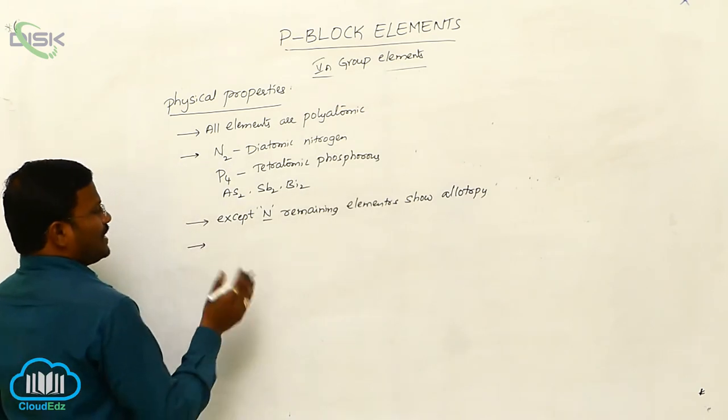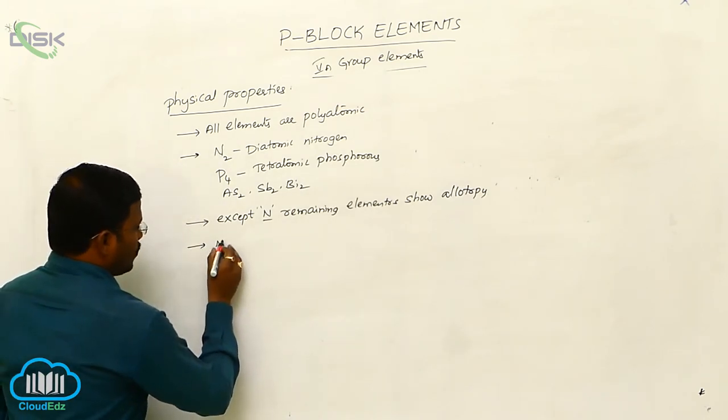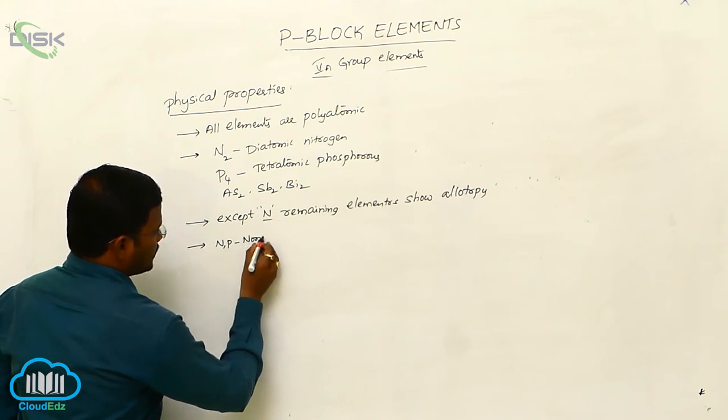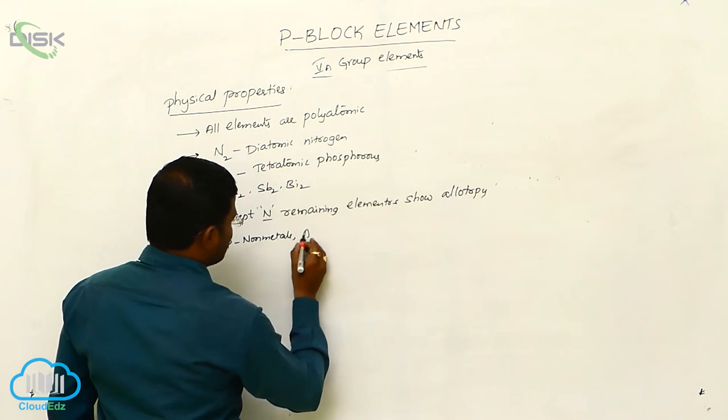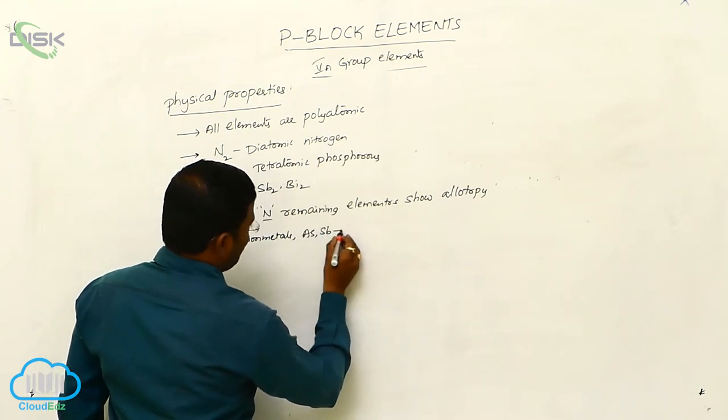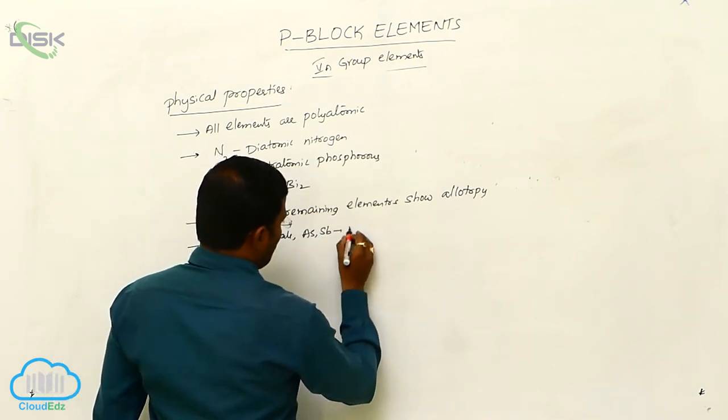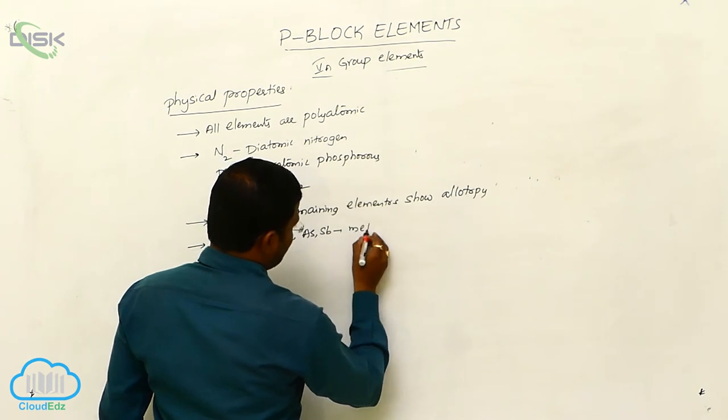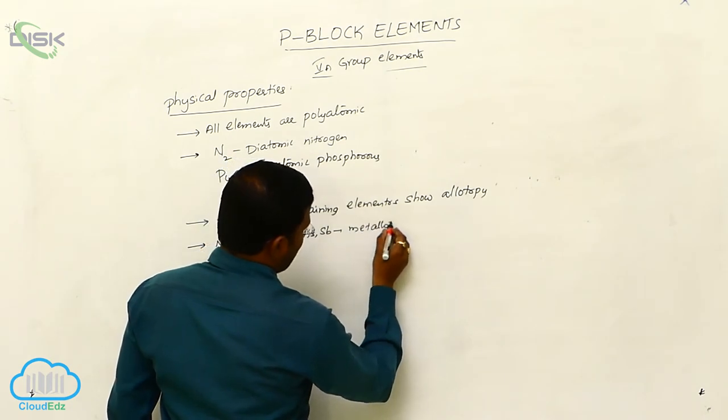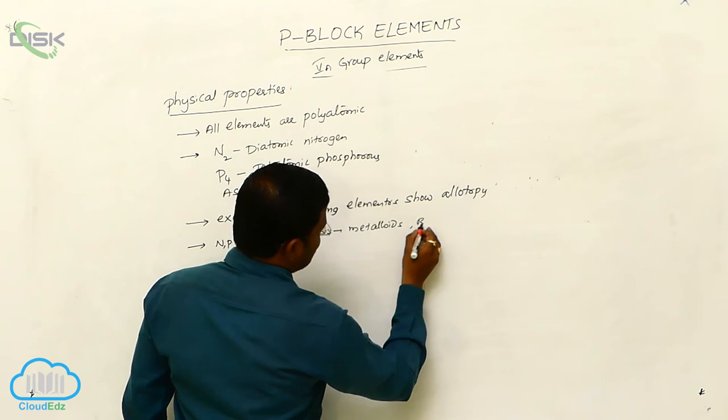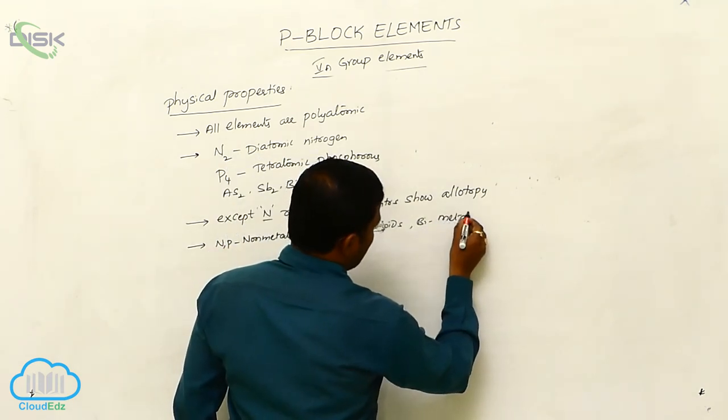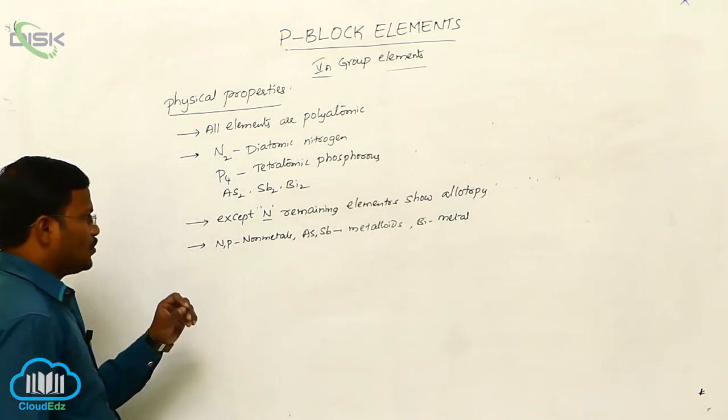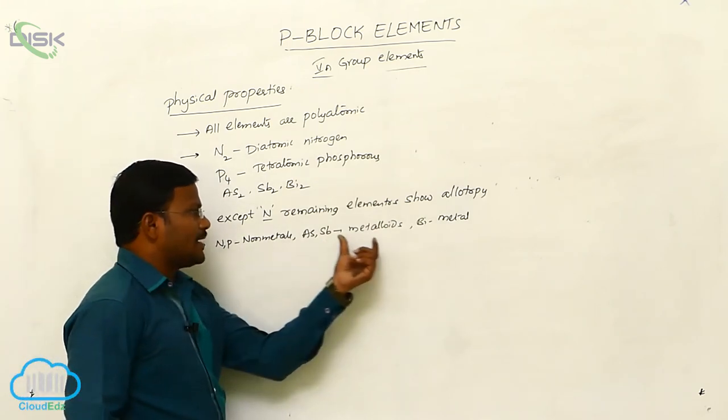As we mentioned just now, nitrogen and phosphorous are non-metals. Arsenic and stibium or antimony are metalloids. Whereas, bismuth is metal. Non-metals, metalloids, metal.